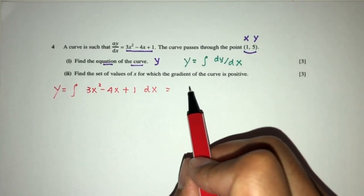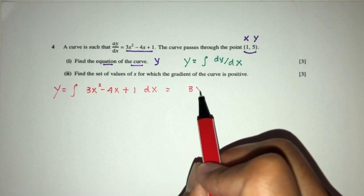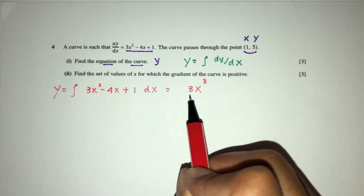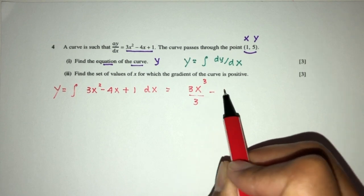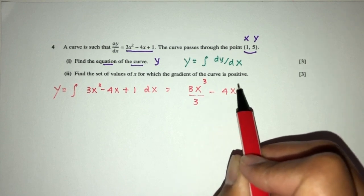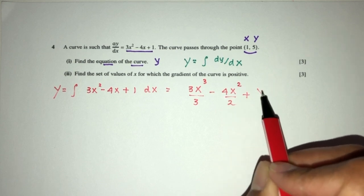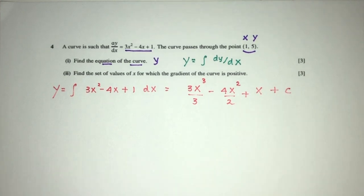This will give you what? 3 is 3. x squared, the power we have to increase by 1, that will be 3, and divide by the same power. Then minus 4x, that will be increased by 1, divide by the same power, and then plus x, and plus c for the constant of integration.